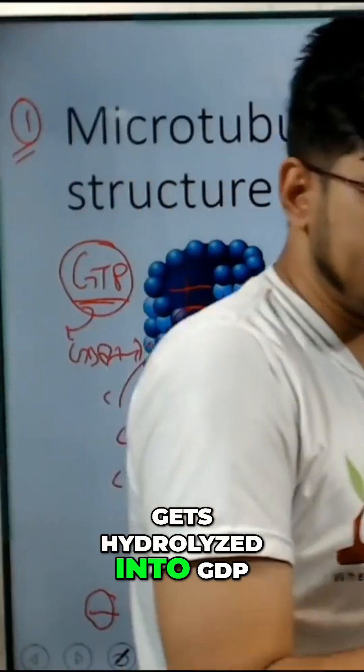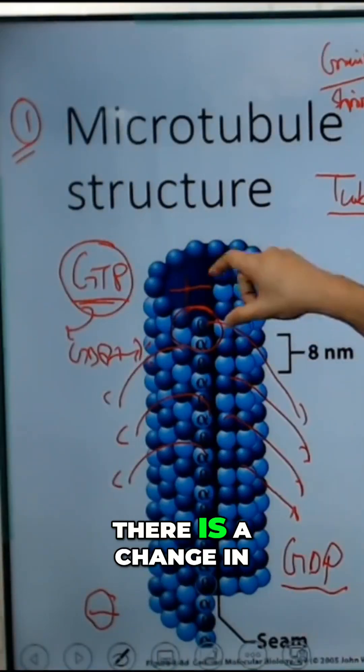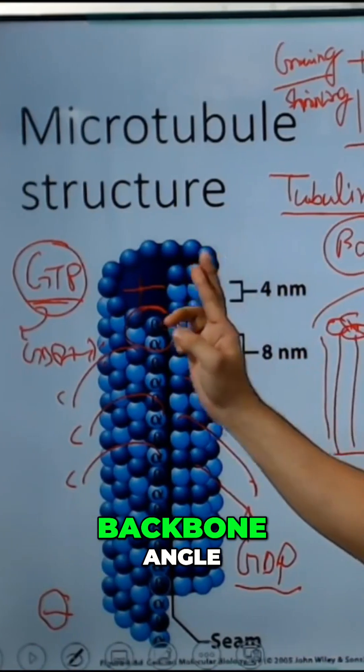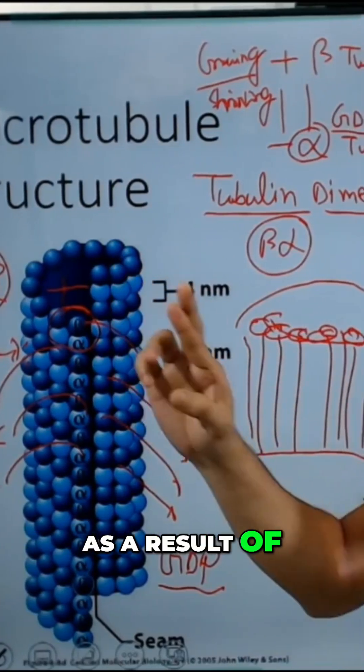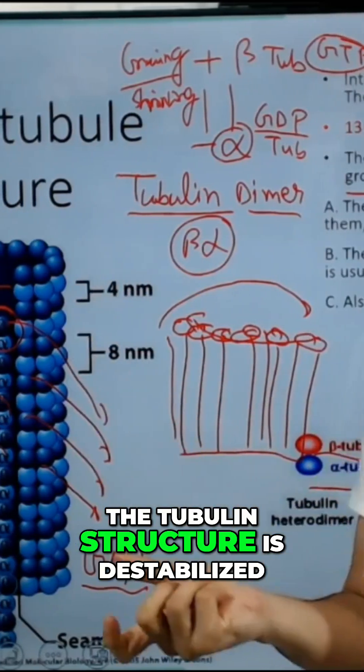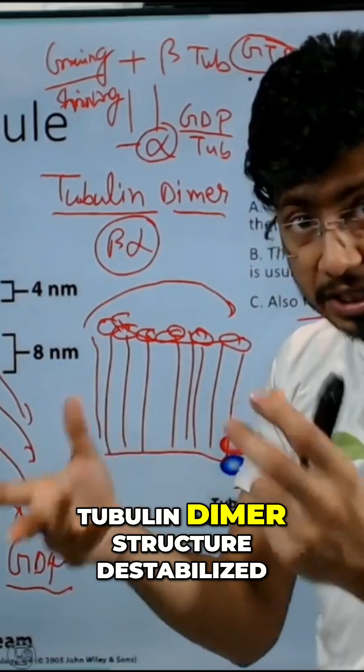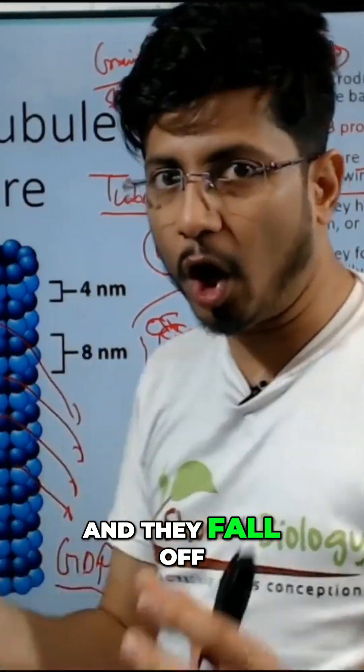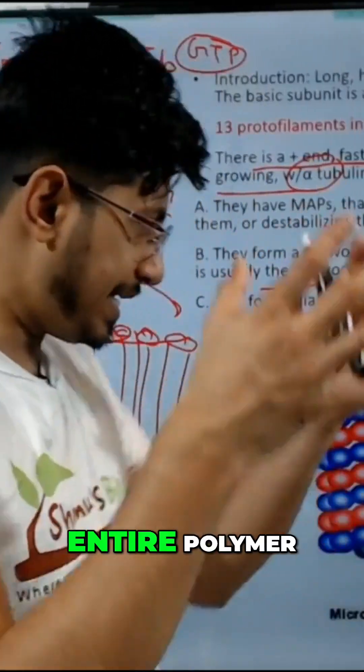Because when GTP gets hydrolyzed into GDP, there is a change in backbone angle. As a result of this change, the tubulin dimer structure is destabilized and they fall off, peeling off from the entire polymer.